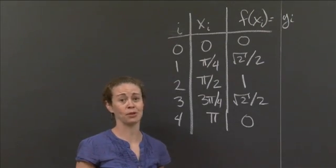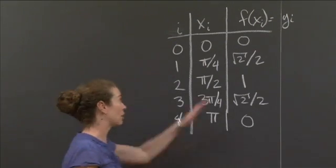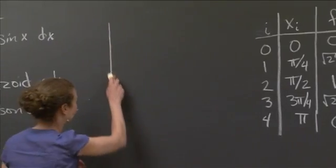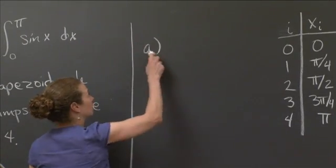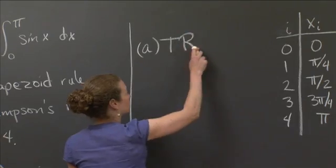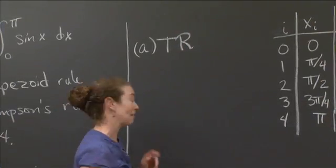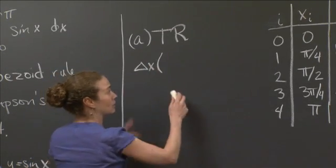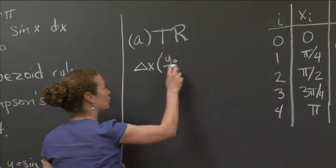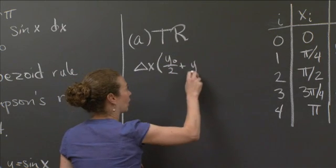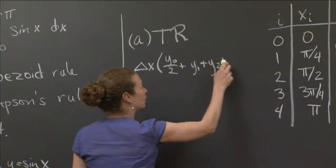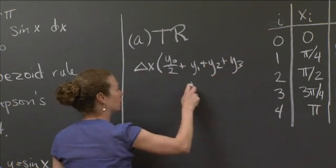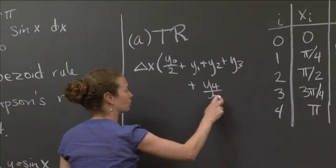So the first thing I'm going to do is the trapezoid rule. So I'll come back over here a little bit. So using the trapezoid rule, let's remember what the trapezoid rule is. The trapezoid rule is delta x times, in this case, we're going to have y0 over 2 plus y1 plus y2 plus y3 plus y4 over 2.